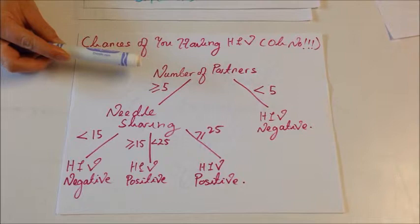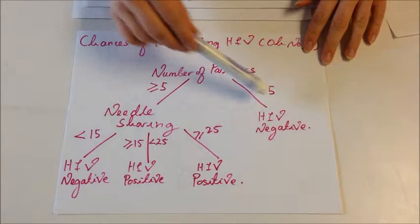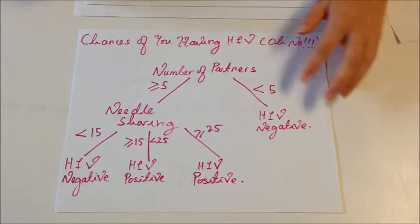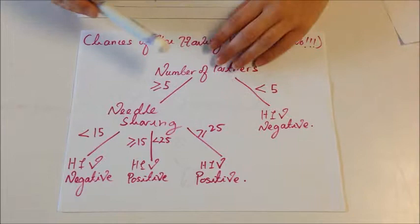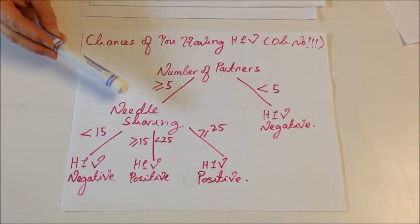So this is a branch. Both of these are branches. We are going to first look at the branch that if you have less than 5 partners, then you are most likely to be HIV negative. If you have more than 5 partners, this branch leads to other nodes. The possible choices can be made following a branch.